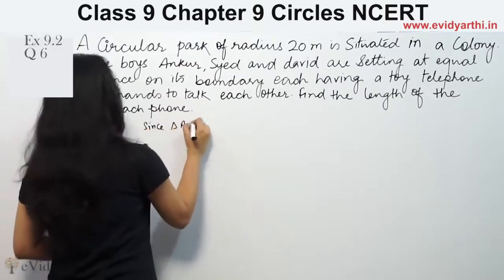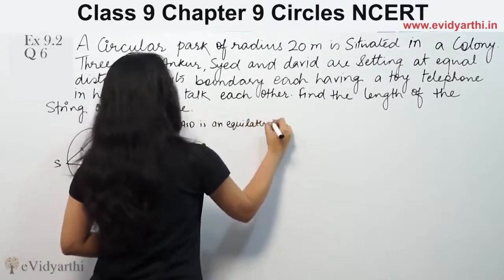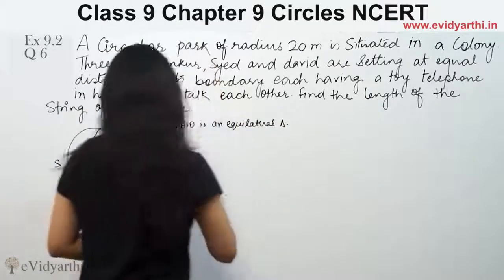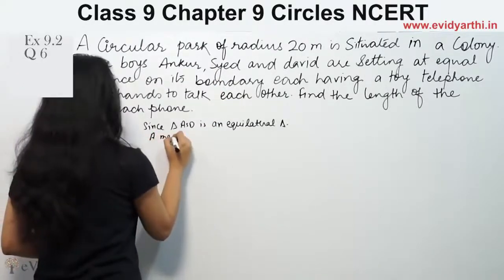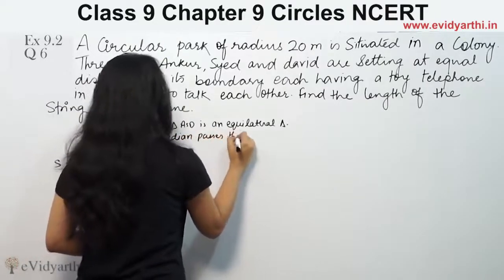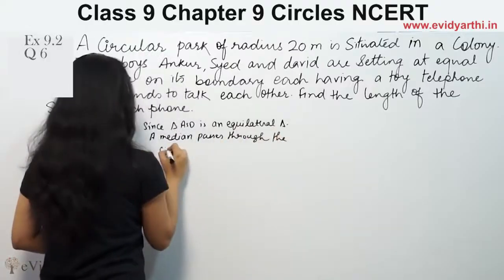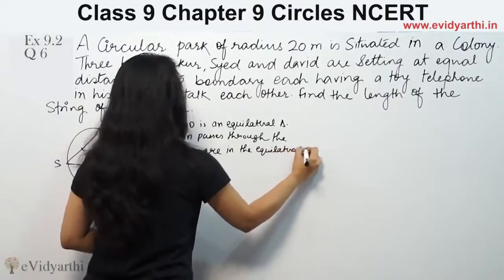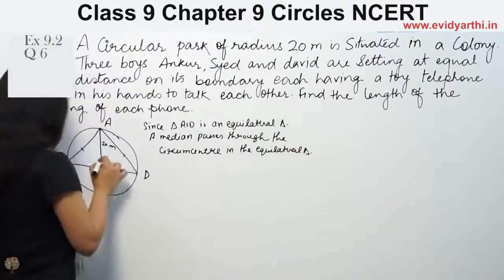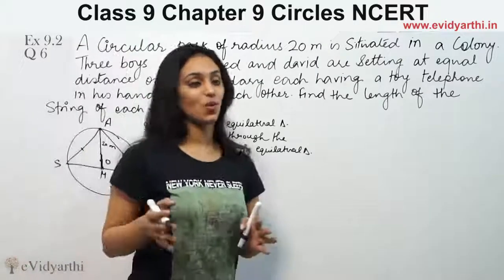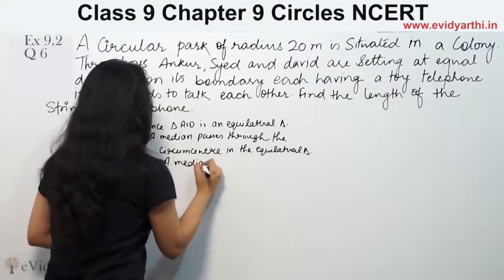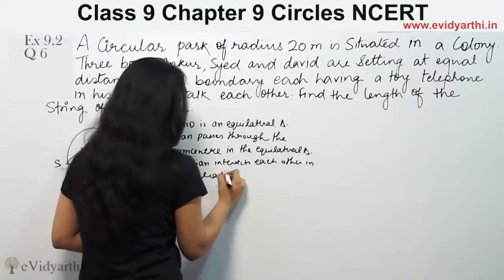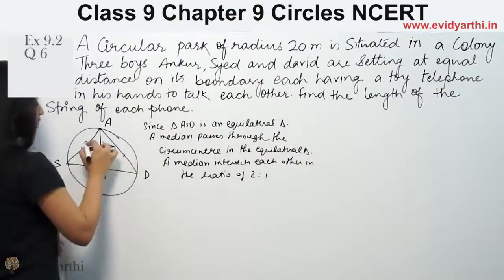Since triangle ASD is an equilateral triangle, and we know that in an equilateral triangle the median passes through the circumcenter. So it passes through the center. Median passes through the circumcenter in an equilateral triangle. And the median intersects each other in the ratio of 2 is to 1. So if we see in triangle ASD, where the median passes here, the ratio of OA to OM will be 2 by 1.